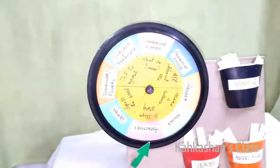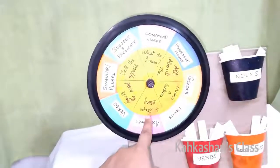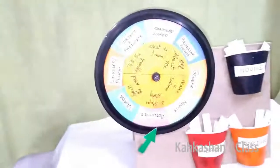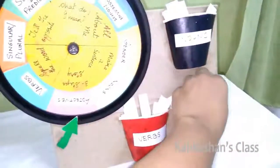Spin the wheel. The marker points out the section, for example, adjectives and three-step story.